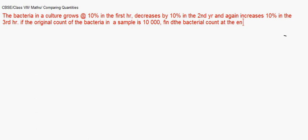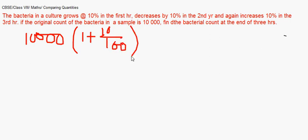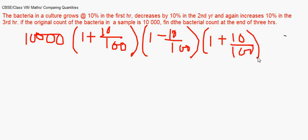Find the count at the end of three hours. This is similar to the previous question. This is the base count of the bacteria. First, because there is an increase, you write 10,000 times (1 + 10/100). In the second hour there is a decrease, so you put (1 - 10/100). At the end of third hour it increases by 10% again. Solve this to get the final count of bacteria at the end of three hours.